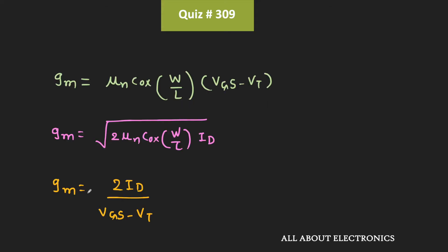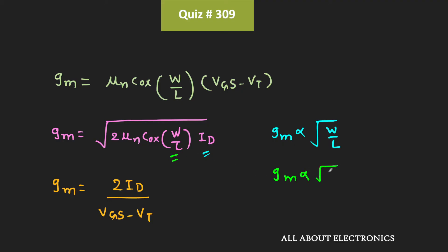If you followed the previous video, we saw that transconductance depends on three different parameters: the W/L ratio, Vgs-Vt, and the drain current id. Depending on which parameter is kept constant, the relationship of transconductance with these parameters will change. For example, from the second expression, when drain current id is kept constant, transconductance gm is proportional to the square root of W/L.